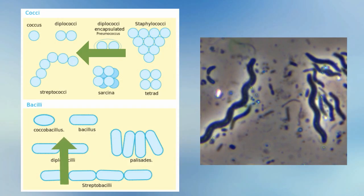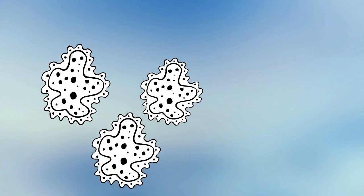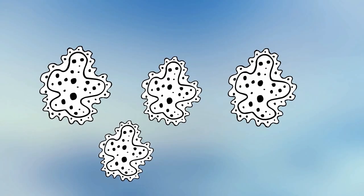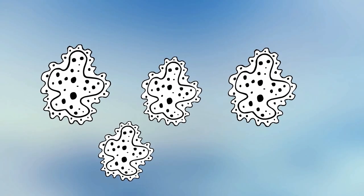Most members of the Monera kingdom reproduce asexually in a process called binary fission, but some reproduce sexually in a process called conjugation.